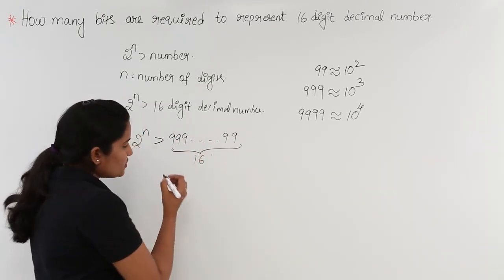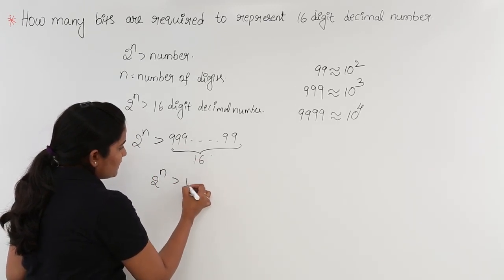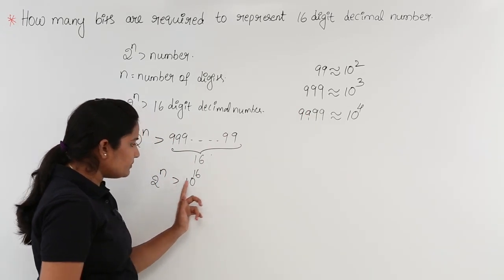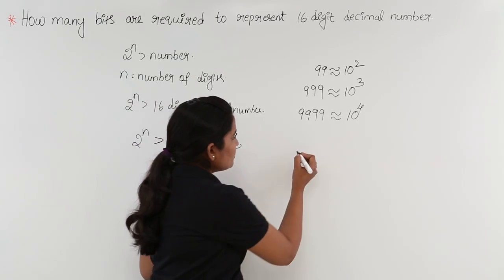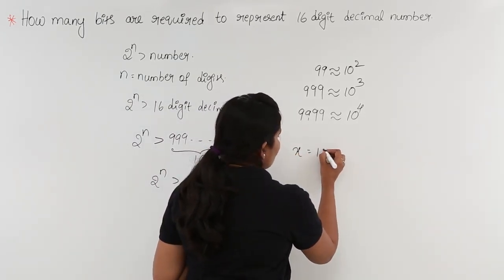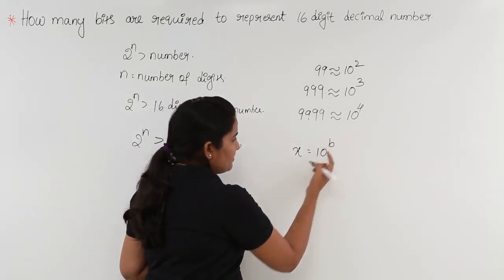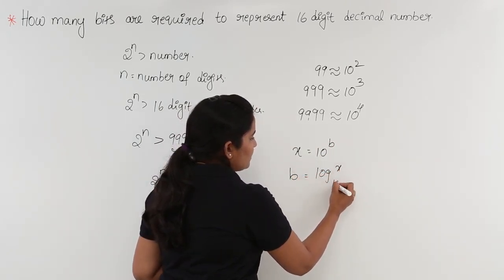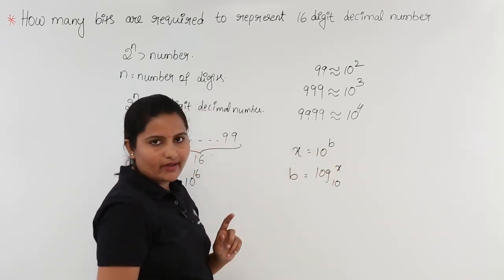So now the equation becomes: 2 power n is greater than 10 power 16. To solve this, I am going to use the log formula. As you know, if x equals 10 power b, then log x base 10 gives you the value b. In the same way, I am going to apply the log formula here.